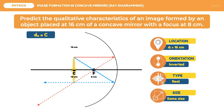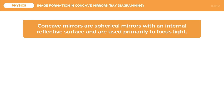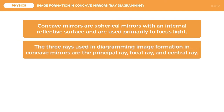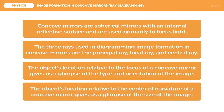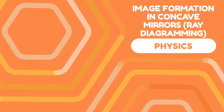To conclude this lesson, let us review the key points. Concave mirrors are spherical mirrors with an internal reflective surface and are used primarily to focus light. The three rays used in diagramming image formation are the principal ray, focal ray, and central ray. The object's location relative to the focus gives us the type and orientation of the image, while the object's location relative to the center of curvature gives us the size of the image. That ends our discussion on image formation in concave mirrors through ray diagramming.